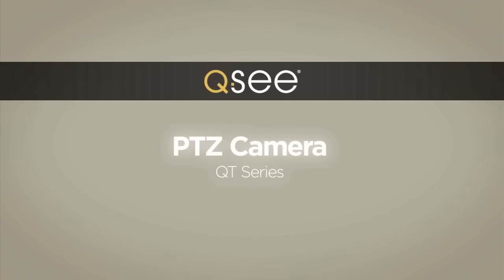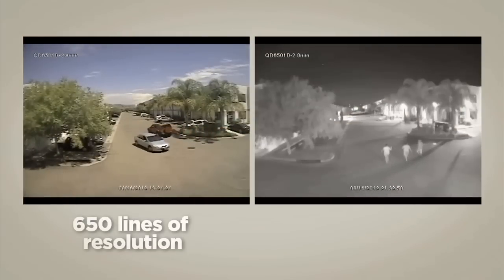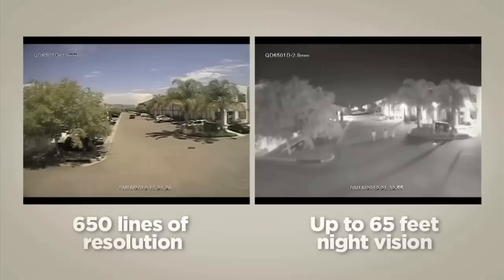The PTZ camera offers the dynamic performance you want for your surveillance system. With 650 lines of resolution, the PTZ captures crisp images, and with up to 65 feet of night vision, you'll see clearly 24-7.